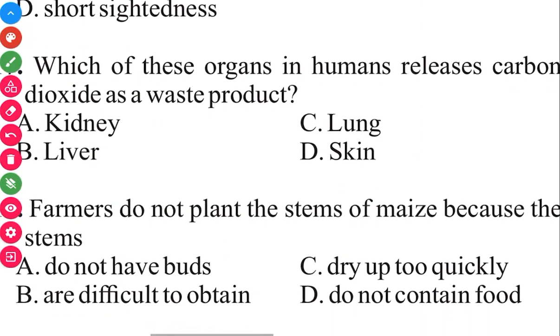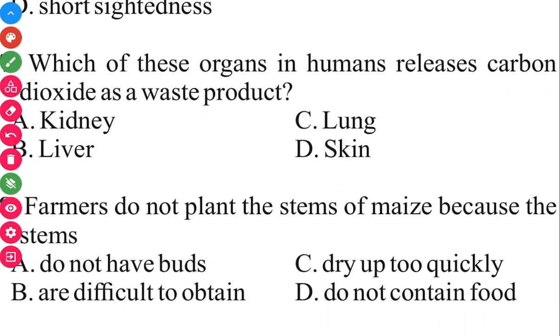Farmers do not plant the stem of maize because stems do not have buds. The answer in 3, 2, 1 is A. They do not have buds. So when you grow them, they wouldn't mature.